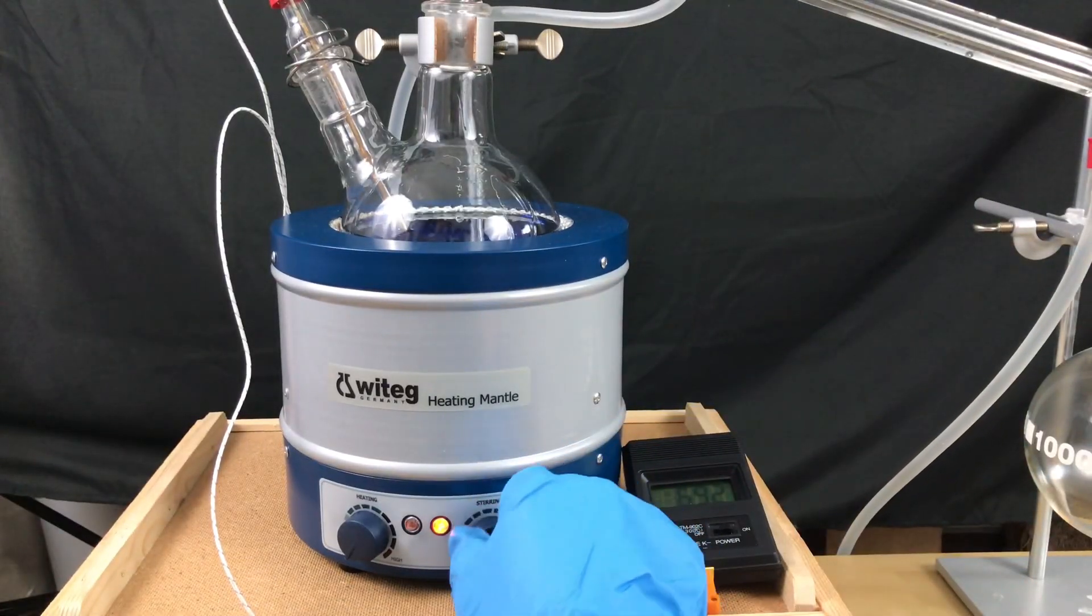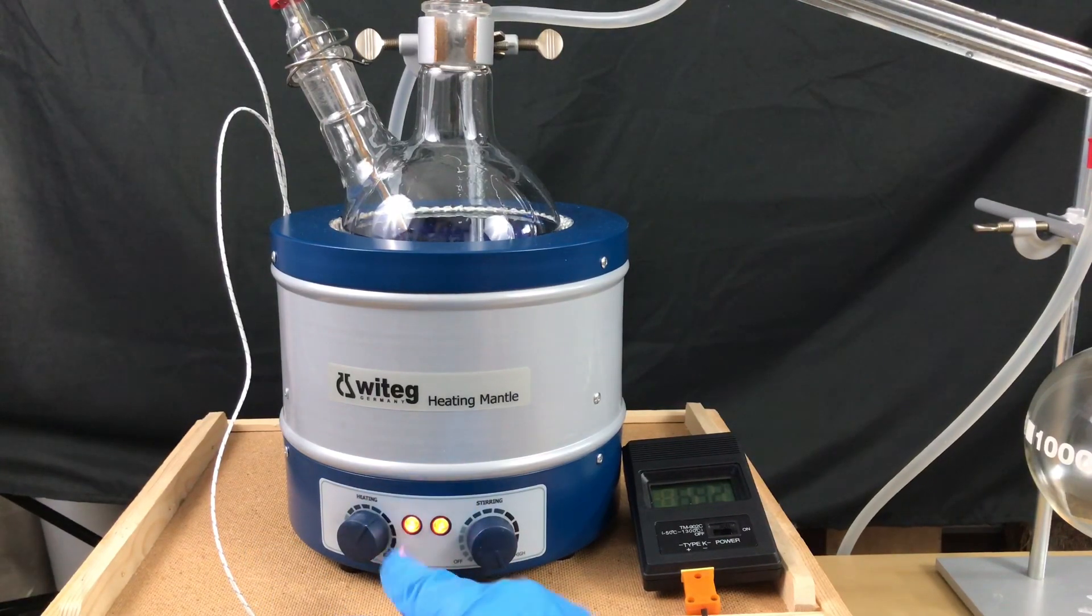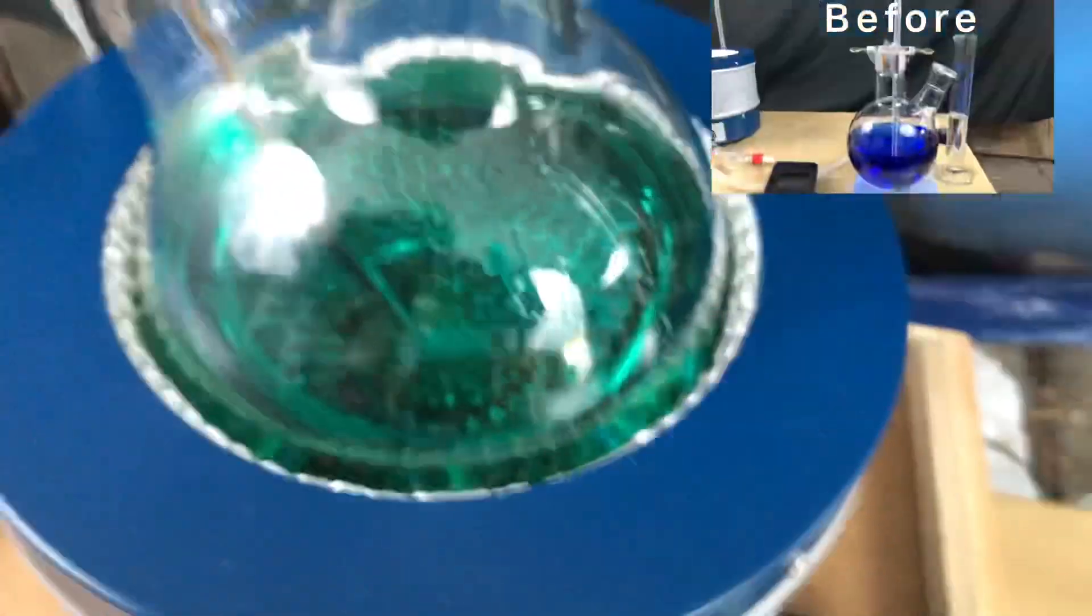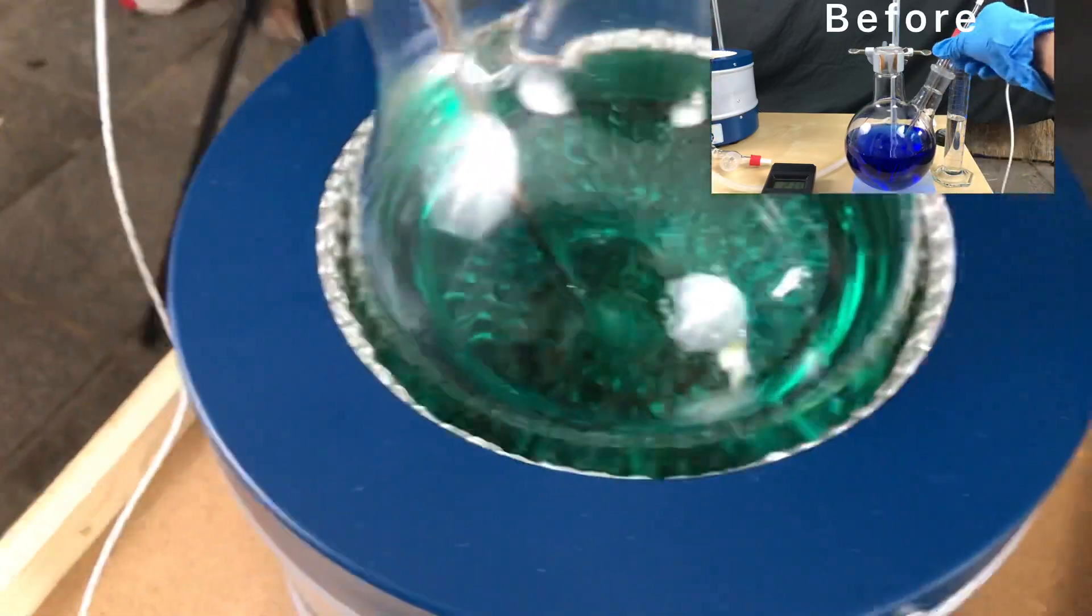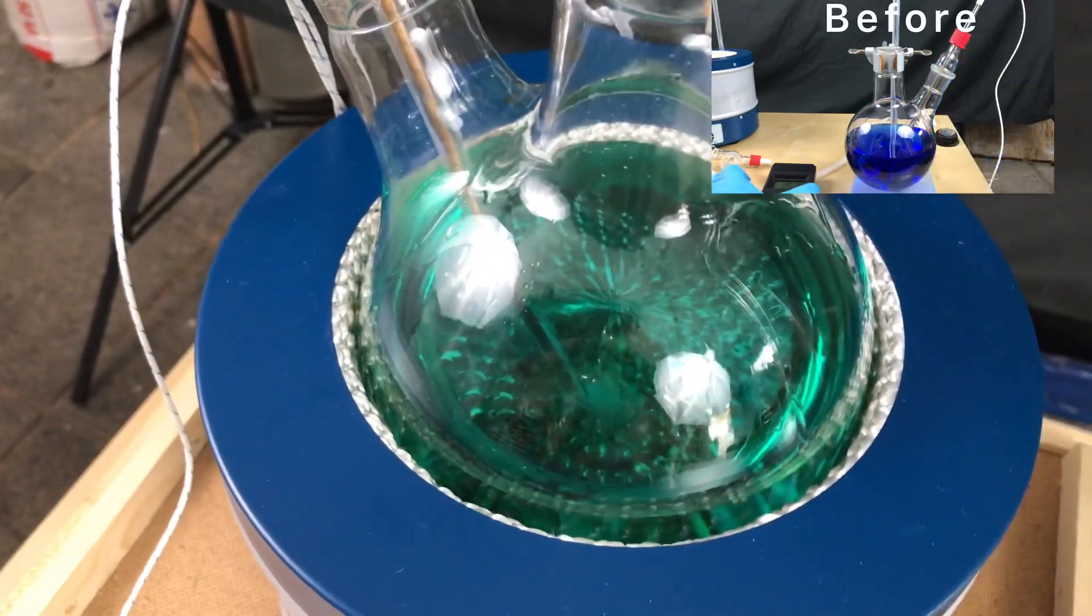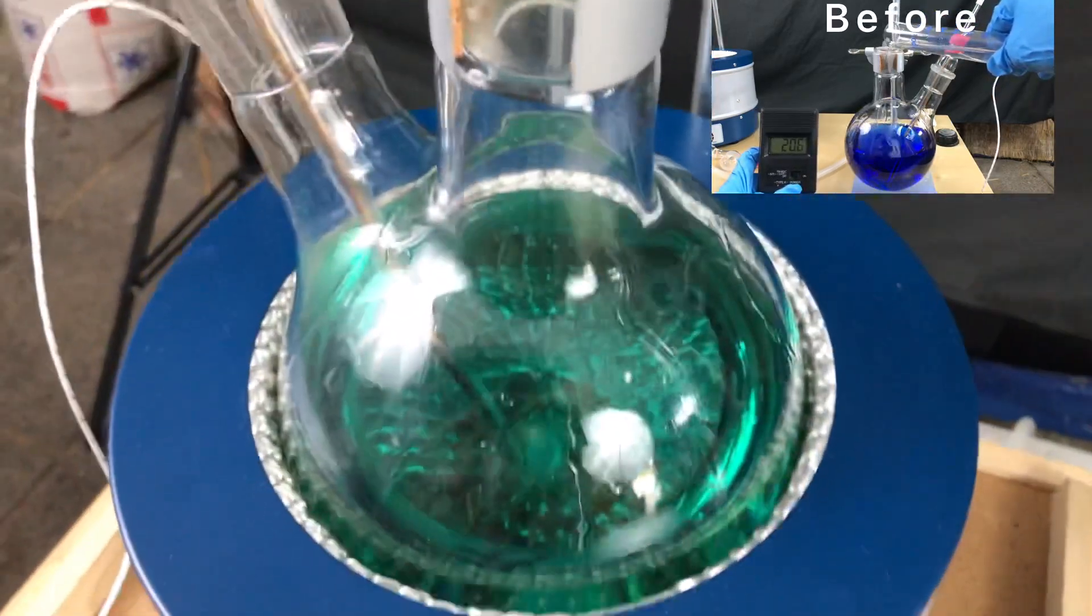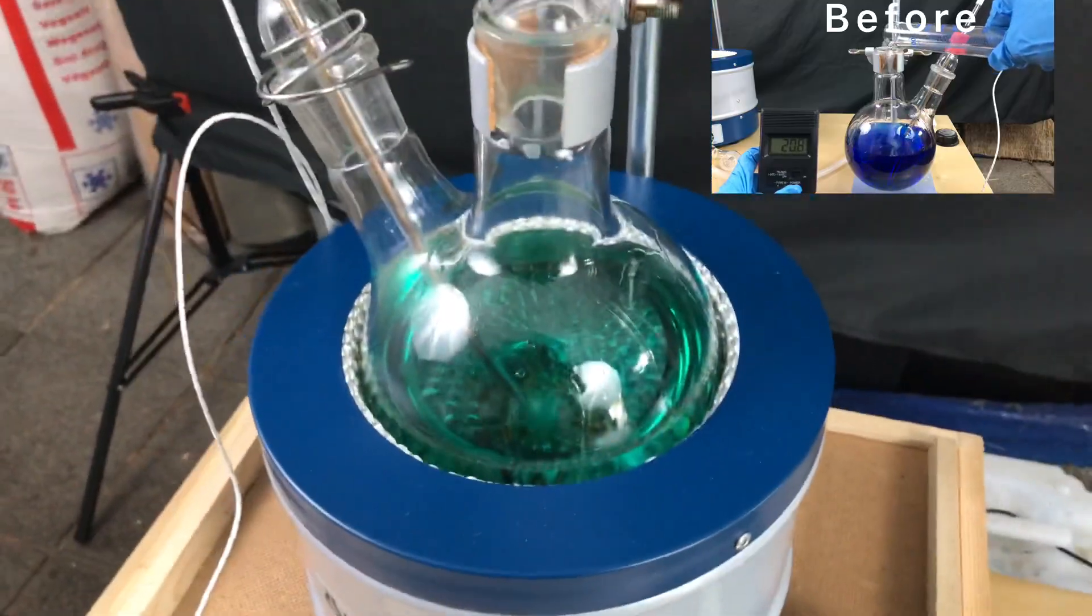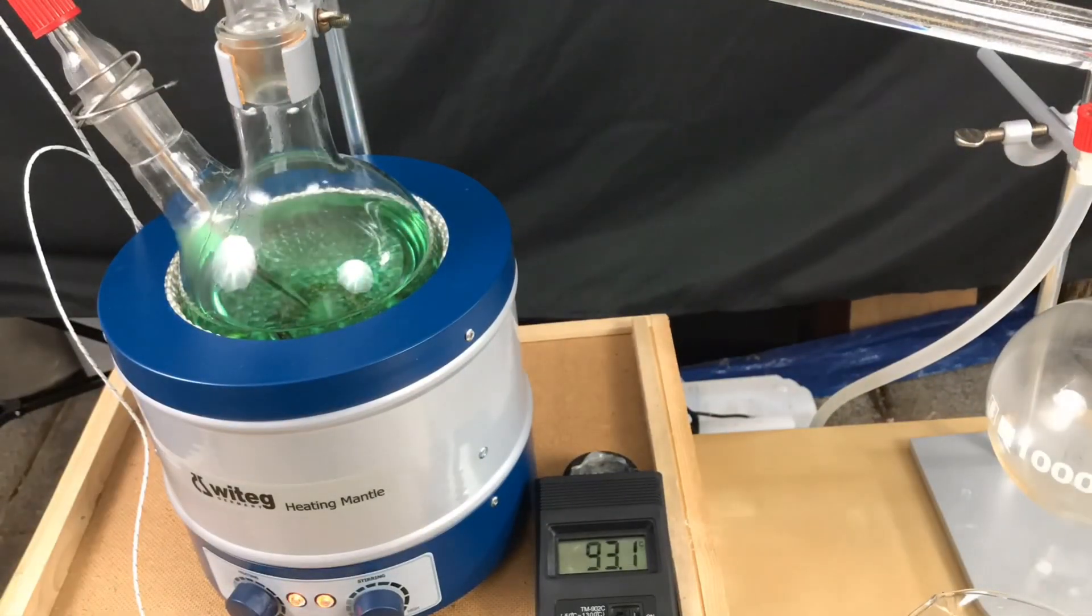We maxed out the magnetic stirrer to its fullest and turned on the heating. I want to note that our antifreeze had changed its color from a dark blue to a greenish color. The reason for this must be that the color reacted with the sulfuric acid. As the temperature rose the color changed even more.